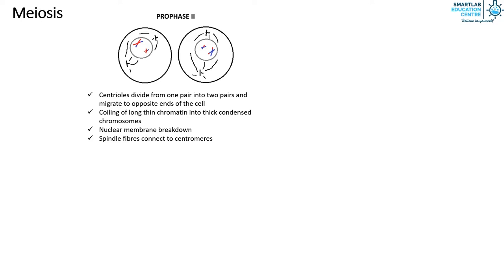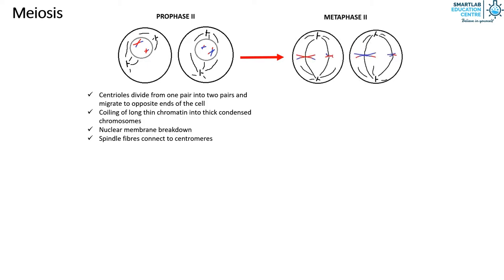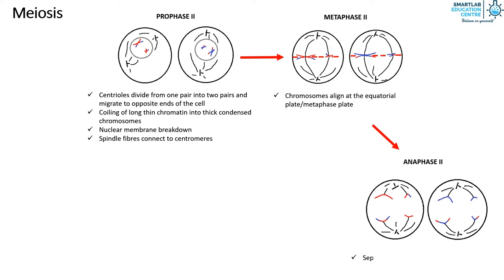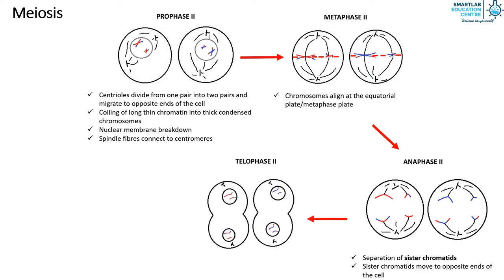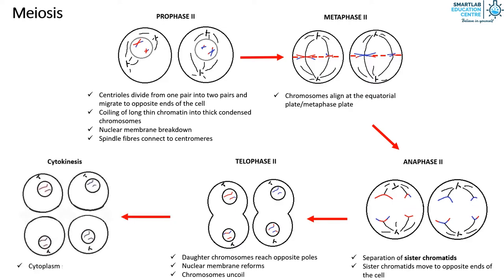Followed by prophase 2 is metaphase 2, where the chromosomes align at the equatorial plate in a different direction compared to metaphase 1, as seen in the diagram. In anaphase 2, the sister chromatids separate and move to opposite ends of the cell. In telophase 2, the daughter chromosomes reach opposite poles, the nuclear membrane reforms, and the chromosomes uncoil. Finally, during cytokinesis, the cytoplasm splits into two, and four genetically different haploid daughter cells are formed.